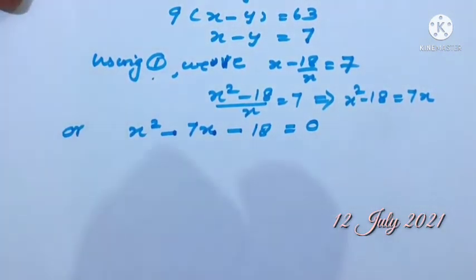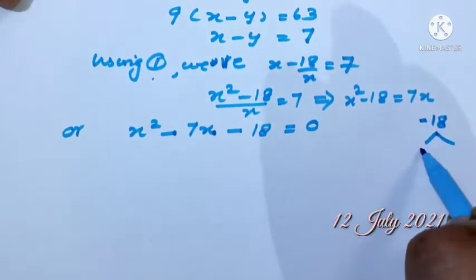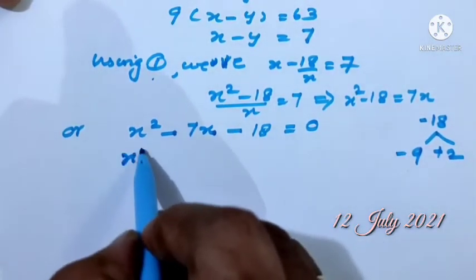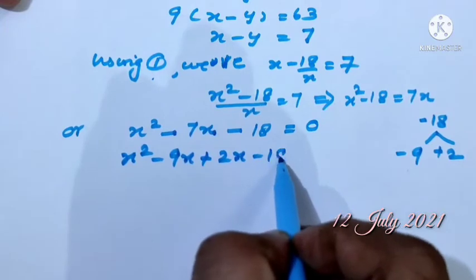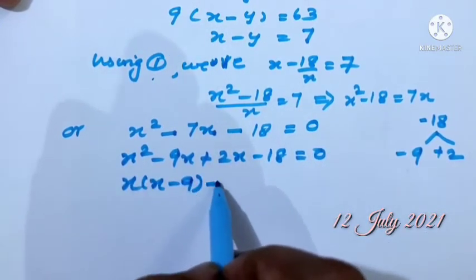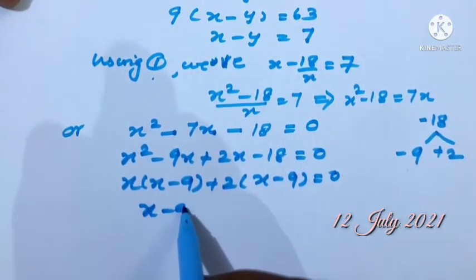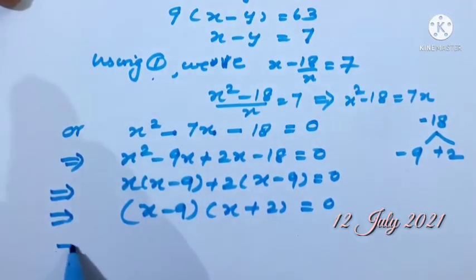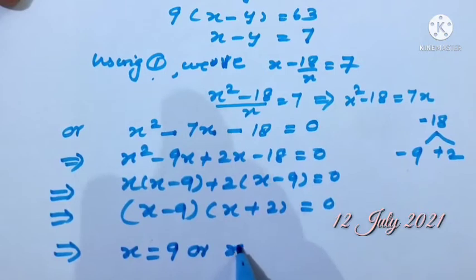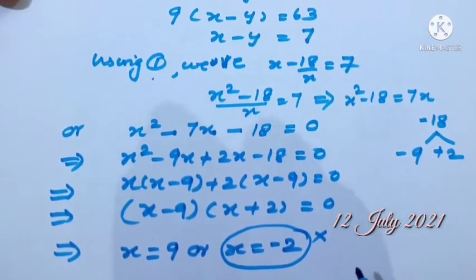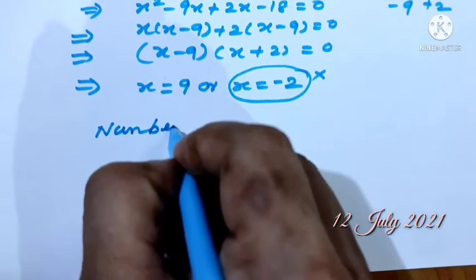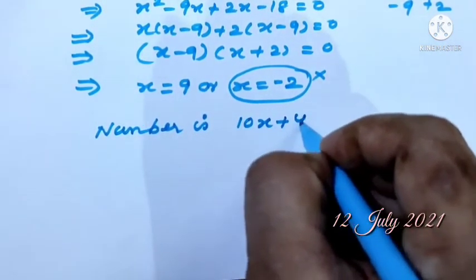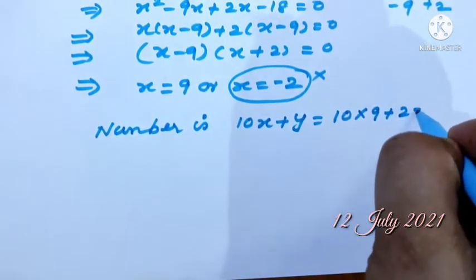Using the factorization method: factors of 18 are 9 and 2. So X squared minus 9X plus 2X minus 18 equals 0. Taking common: X(X minus 9) plus 2(X minus 9) equals 0, giving (X minus 9)(X plus 2) equals 0. Therefore X equals 9 or X equals minus 2. Since minus 2 is not applicable, X equals 9. Y equals 18 by 9 equals 2. The number is 10 times 9 plus 2, which is 92.